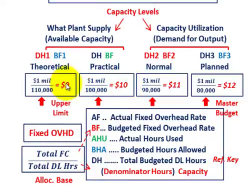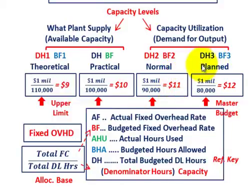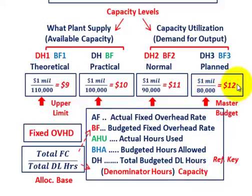From theoretical we're only assigning nine dollars per hour for fixed overhead, and practically we're going up to ten dollars per hour — it's increasing. The third alternative is normal capacity: again one million dollars in fixed costs, but we're saying the plant can only put out 90,000 direct labor hours, giving a fixed overhead rate of eleven dollars per hour. The fourth alternative is the planned or master budgeted amount — fixed costs of one million dollars and planned capacity of 80,000 direct labor hours, giving a fixed overhead rate of twelve dollars per hour.